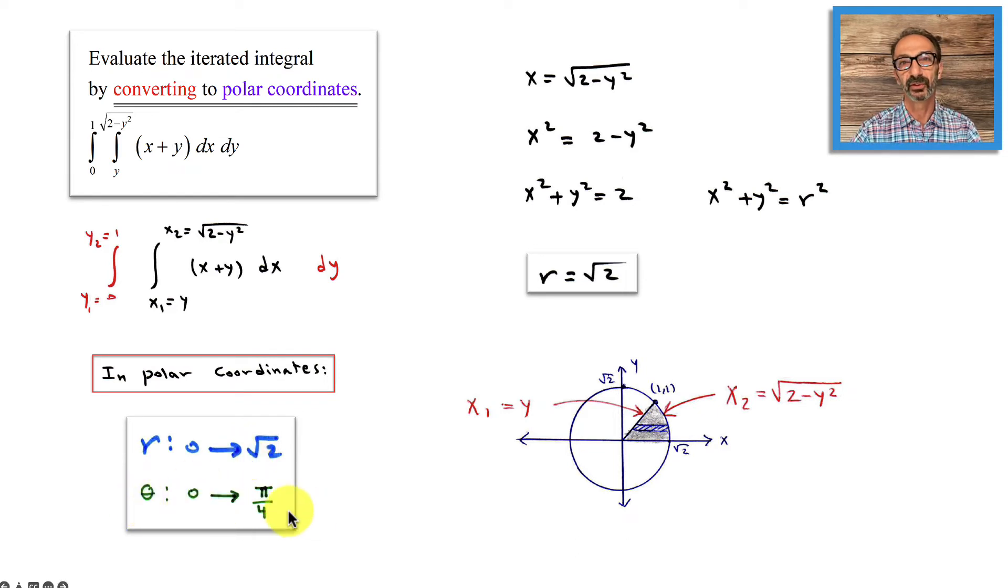So r goes from 0 to square root of 2, and theta goes from 0 to pi over 4, 45 degrees. Now let's start a new slide and we'll take care of it.